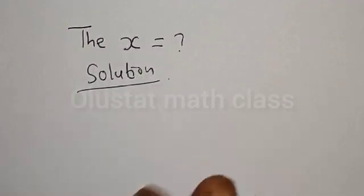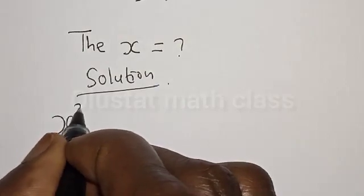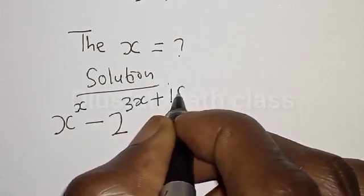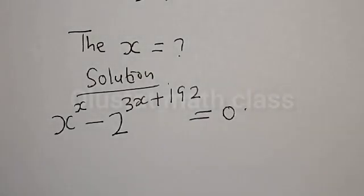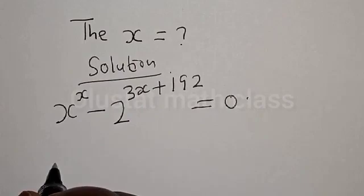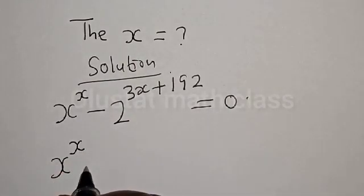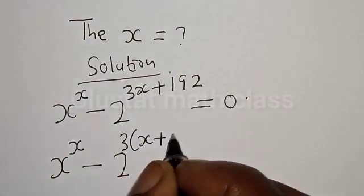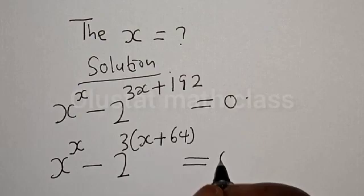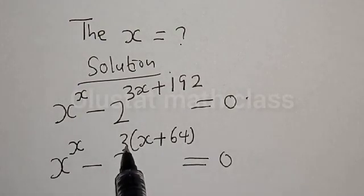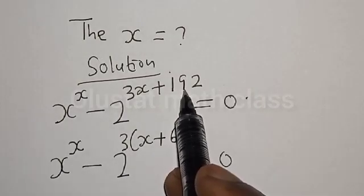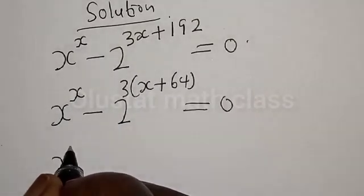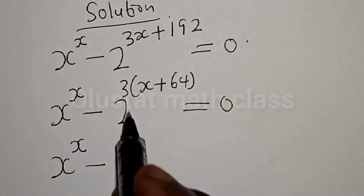We have the given equation: s raised to power s minus 2 raised to power 3s plus 192 is equal to 0. Now what do we do? We have s raised to power s minus 2 raised to power 3s plus 192. Let's factor this — we have 3 into s plus 64 is equal to 0, because 3 times s is 3s, and 3 times 64 is 192.